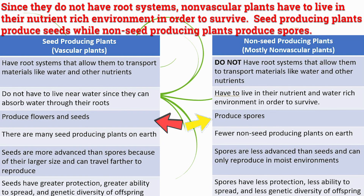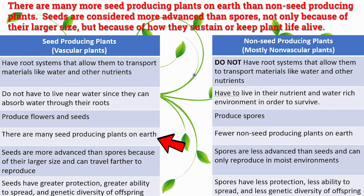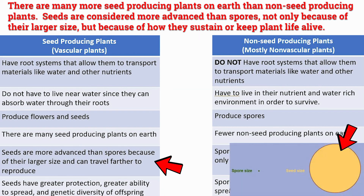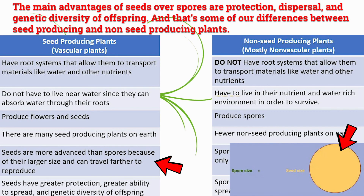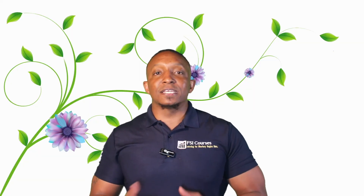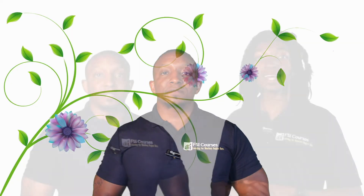Seed-producing plants produce seeds, while non-seed-producing plants produce spores. There are many more seed-producing plants on earth than non-seed-producing plants. Seeds are considered more advanced than spores, not only because of their larger size, but because of how they sustain plant life. The main advantages of seeds over spores are protection, dispersal, and genetic diversity of offspring.